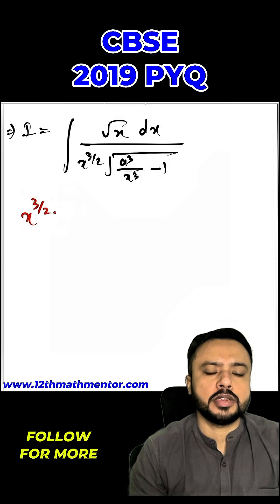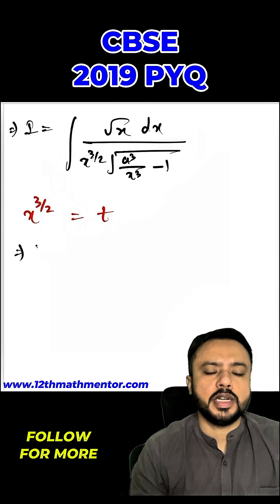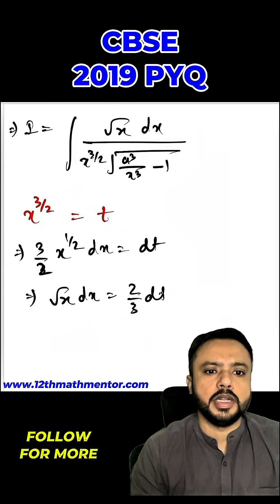Now I am going to use a substitution where I am going to substitute x raised to the power 3 by 2 as t. So when I will differentiate it, I will get 3 by 2 x raised to the power 1 by 2 dx equals to dt, so from where I can say root x dx would be equal to 2 by 3 dt.